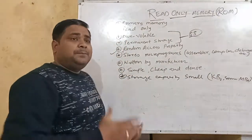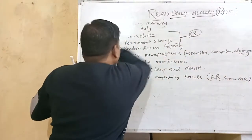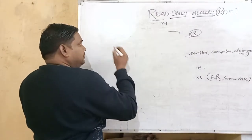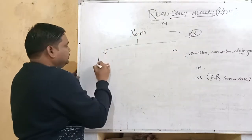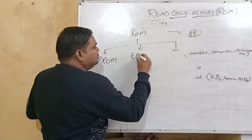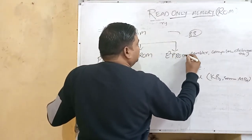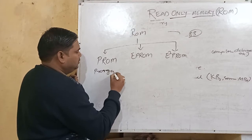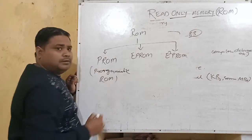ROM has several types. We have three main categories: the first is PROM — Programmable Read-Only Memory. The second category is EPROM — Erasable Programmable Read-Only Memory. The third category is EEPROM — Electrically Erasable Programmable Read-Only Memory.